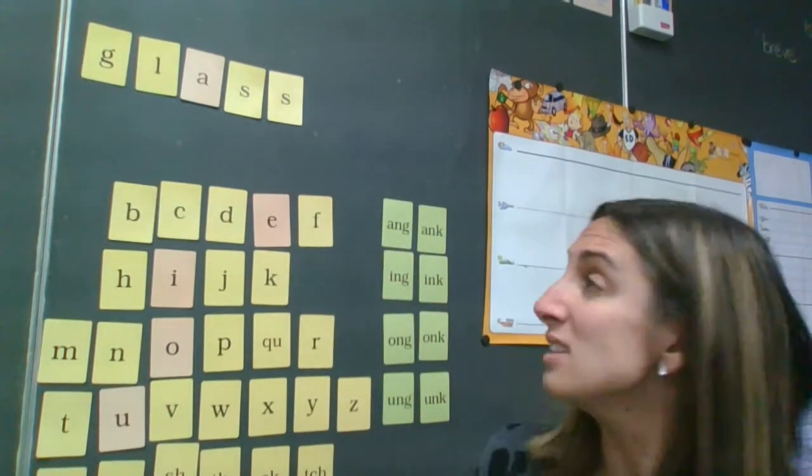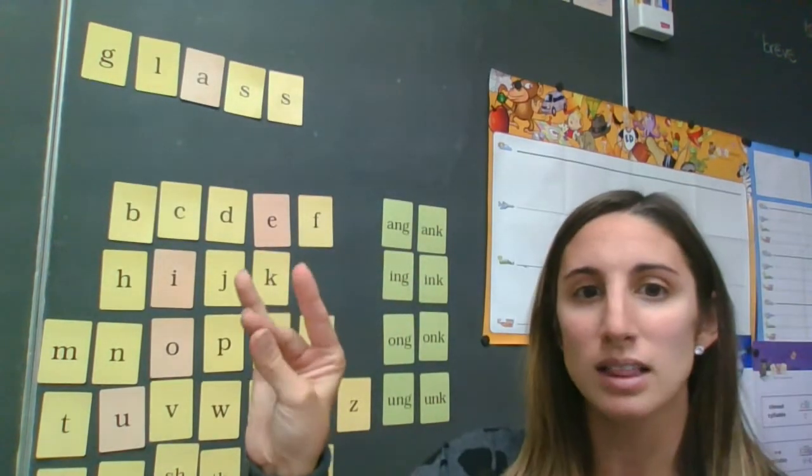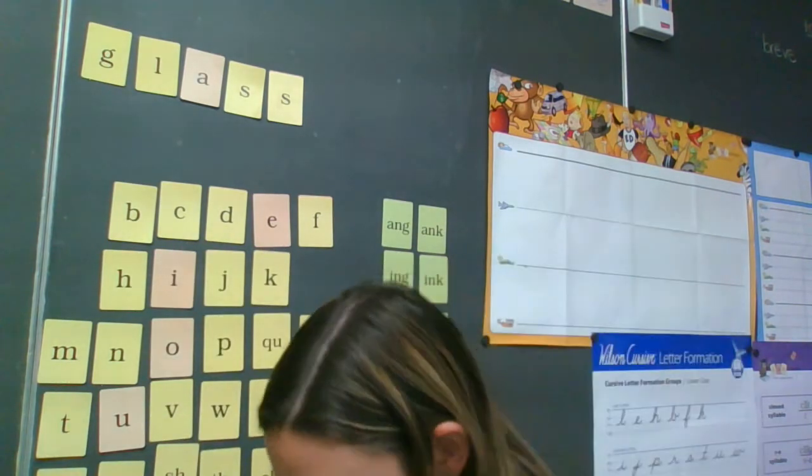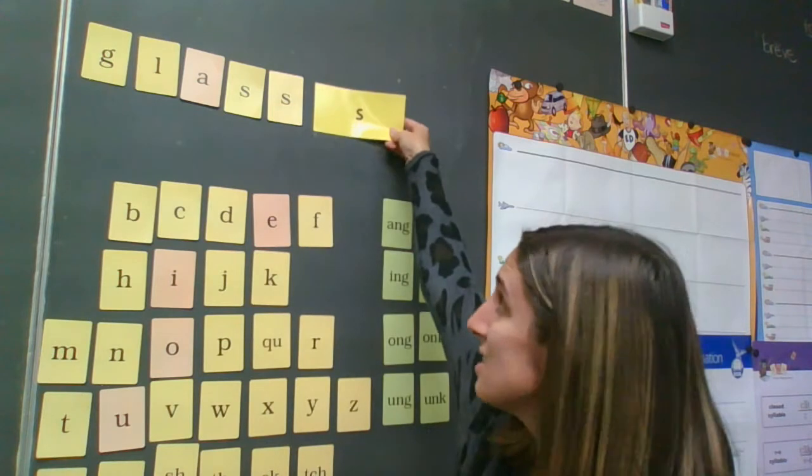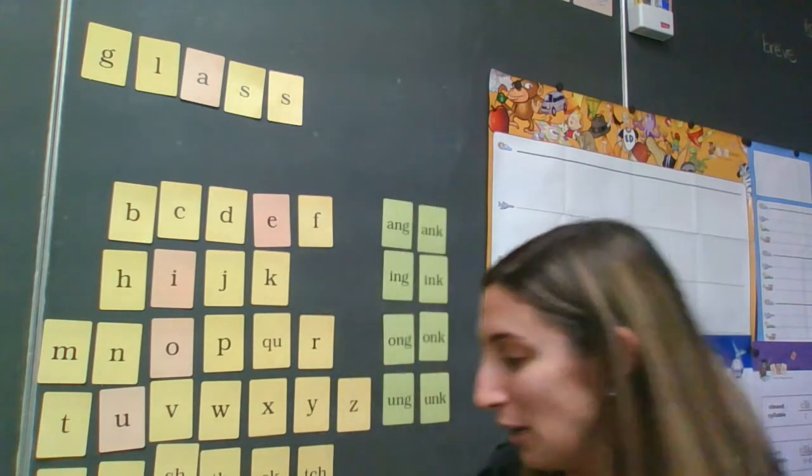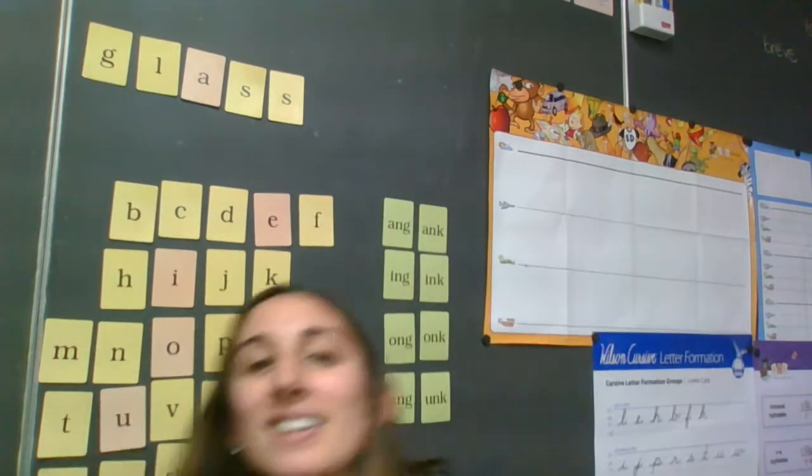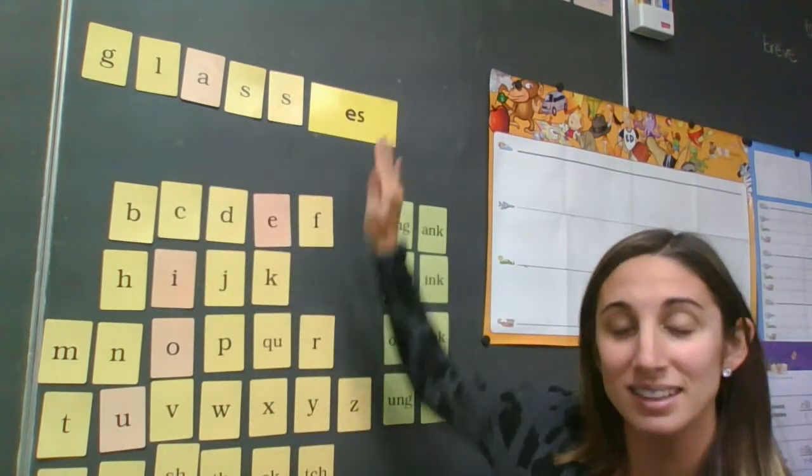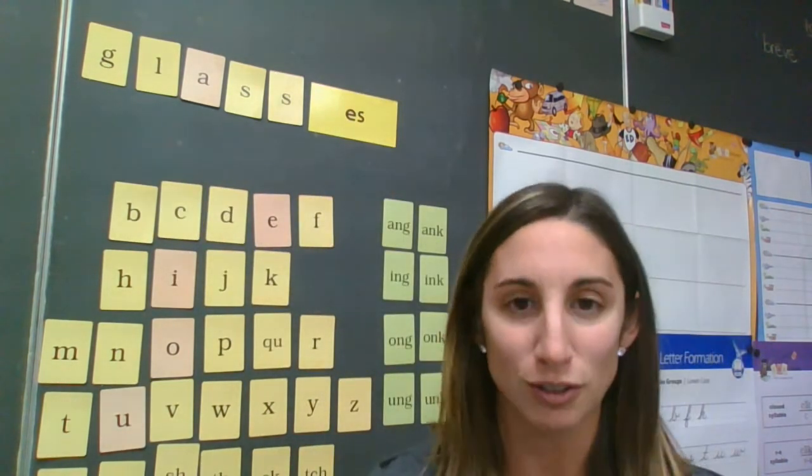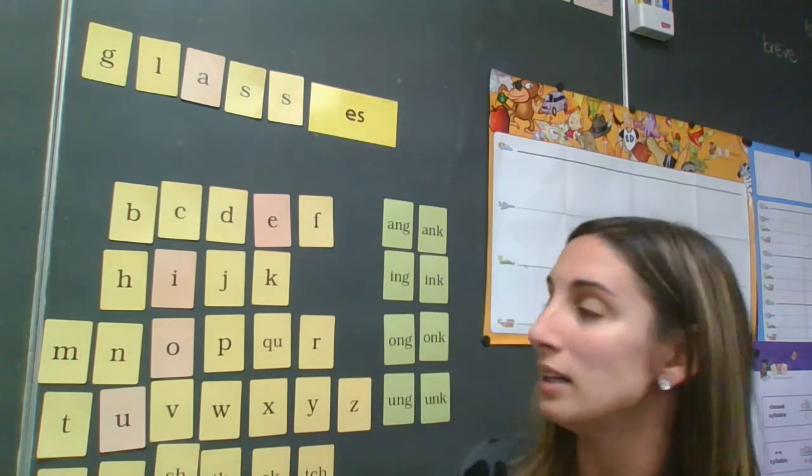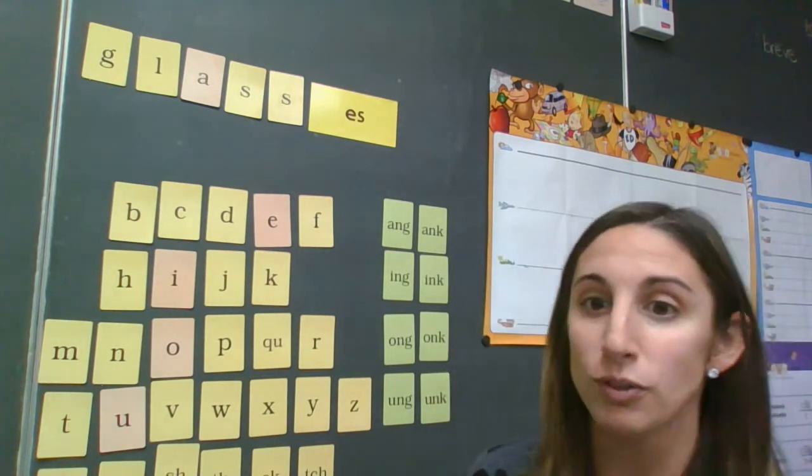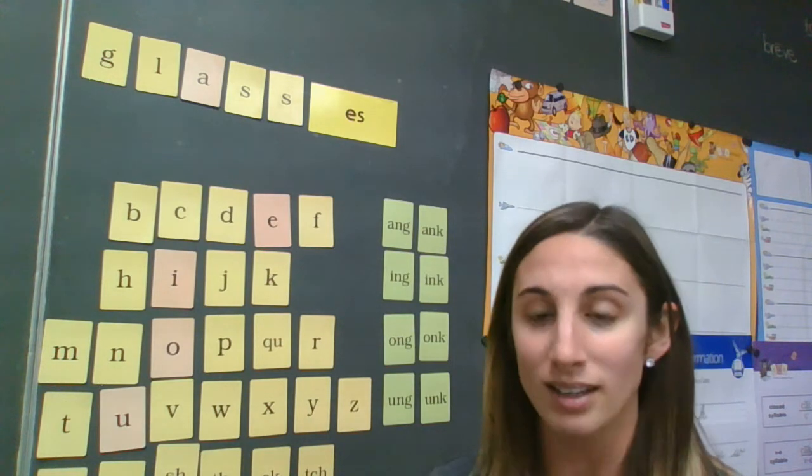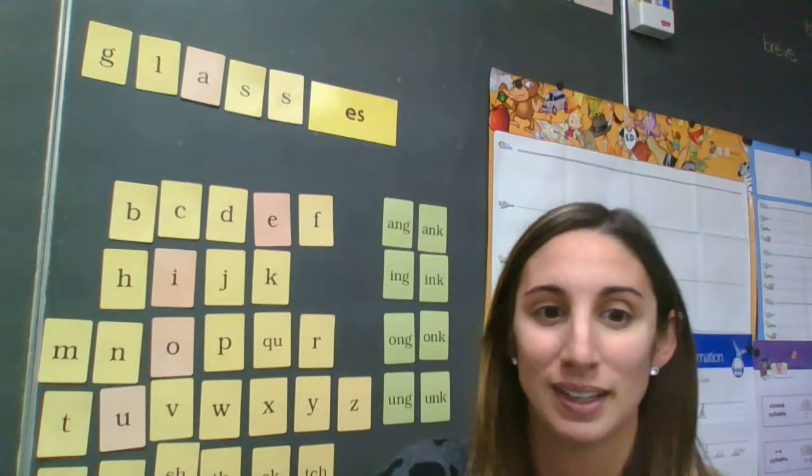Okay, here's my next base word. It is G, L, A, S, S, glass. But if I wanted to make it plural, would I be using this suffix? No. Which one? Right. E, S. So, now my word is glasses. Some of you might wear glasses for your vision. So, remember, yesterday we went over the rule for adding an S or an E, S to the end of a noun to make it plural.